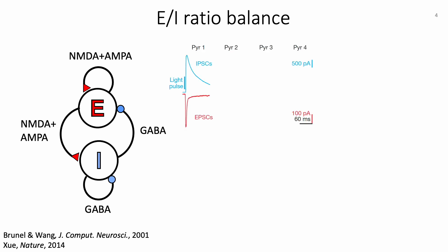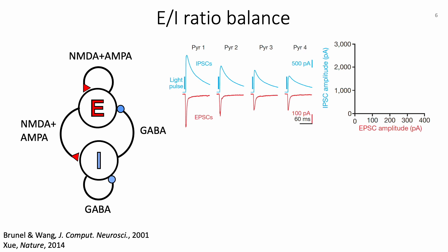Here are some waveforms showing the amplitude of excitatory post-synaptic current and inhibitory post-synaptic current of a pyramidal cell upon photoactivation. If we compare the amplitude across the four pyramidal cells measured, cells receiving larger excitation also receive larger inhibition, so overall the excitation and inhibition are balanced. If we plot these values on a scatter plot, there is a positive linear relationship between them.